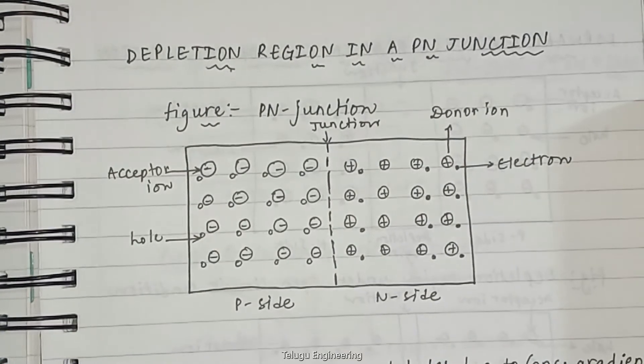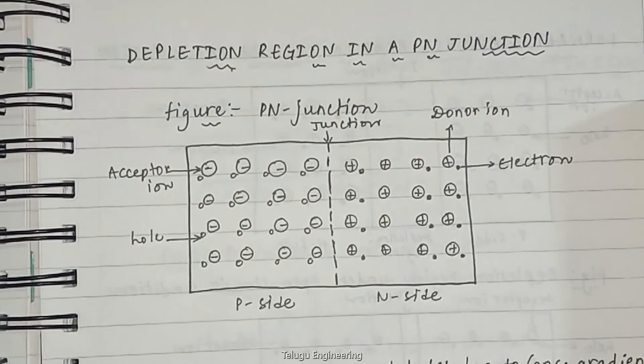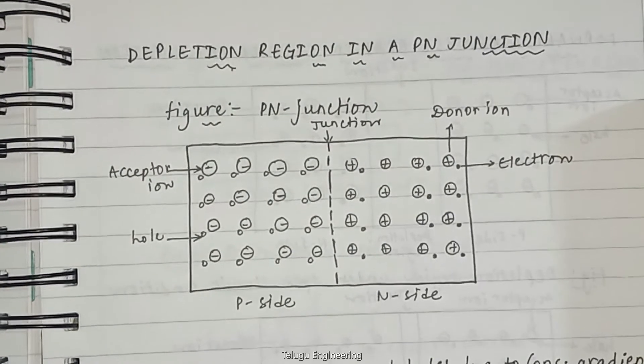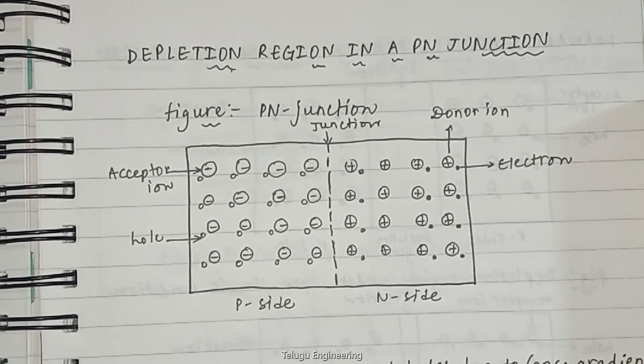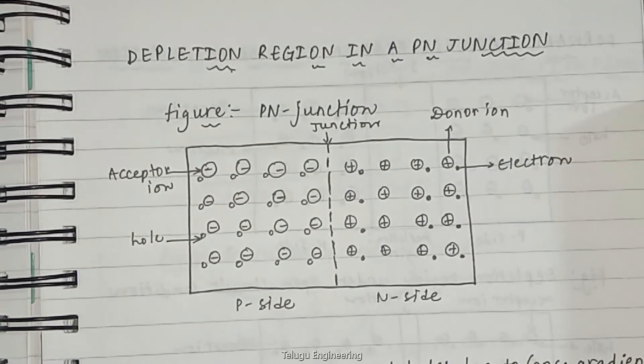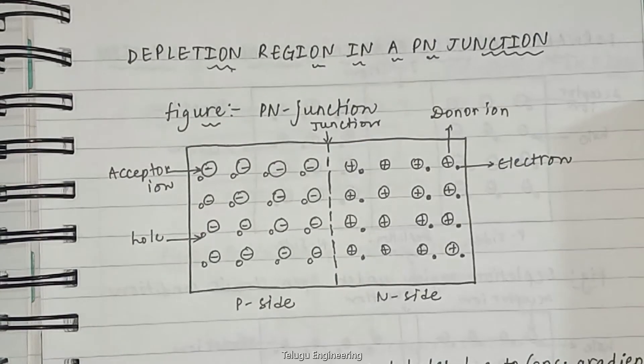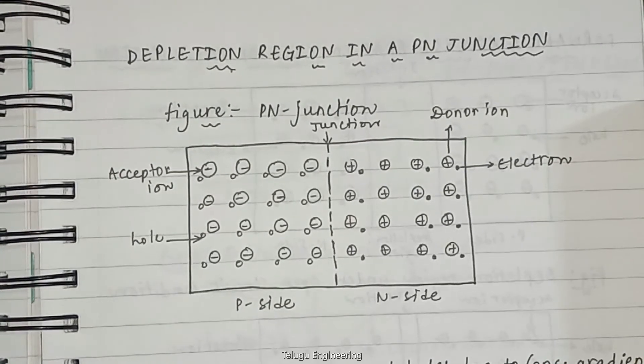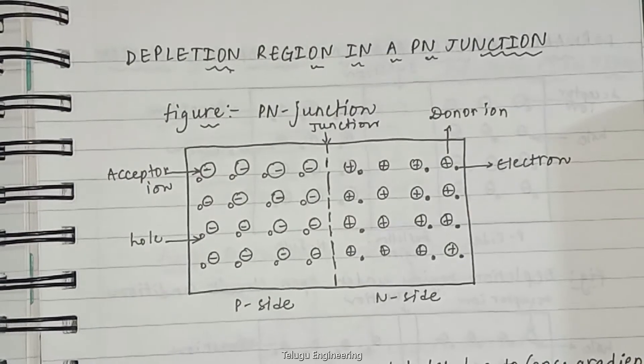Since it is a single crystal semiconductor, there is a concentration gradient of holes from P to N side as well as a concentration gradient of electrons from N to P side. Whenever there is a concentration gradient, the carriers, that is holes and electrons, move or flow from higher concentration region to lower concentration region.